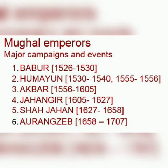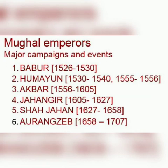Aurangzeb (1658–1707): In the northeast, the Ahoms were defeated in 1663 but rebelled again in the 1680s. Campaigns in the northwest against the Yusufzai and the Sikhs were temporarily successful. Mughal intervention in the succession and internal politics of the Rathor Rajputs of Marwar led to their rebellion. Campaigns against the Maratha chieftain Shivaji were initially successful, but Aurangzeb insulted Shivaji, who escaped from Agra, declared himself an independent king, and resumed his campaigns against the Mughals.